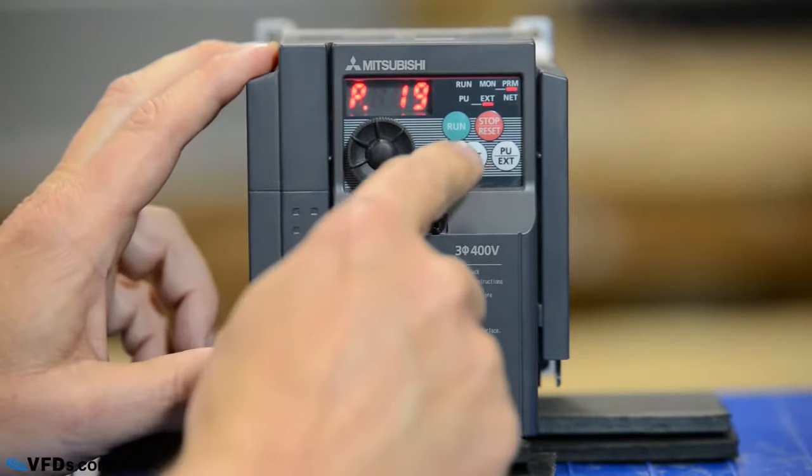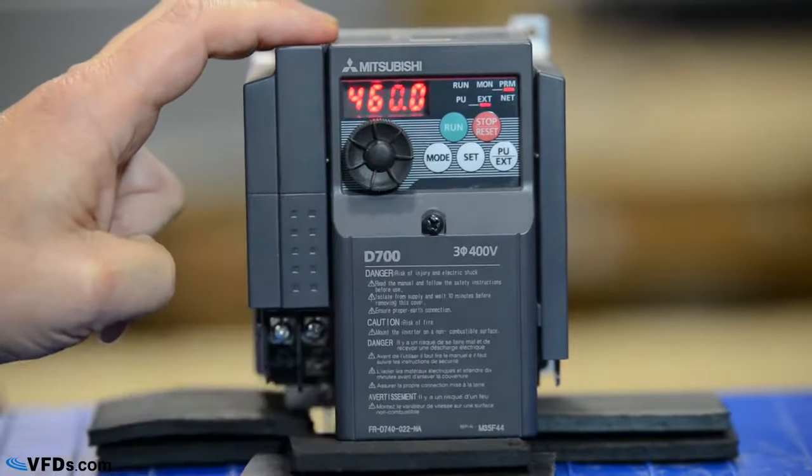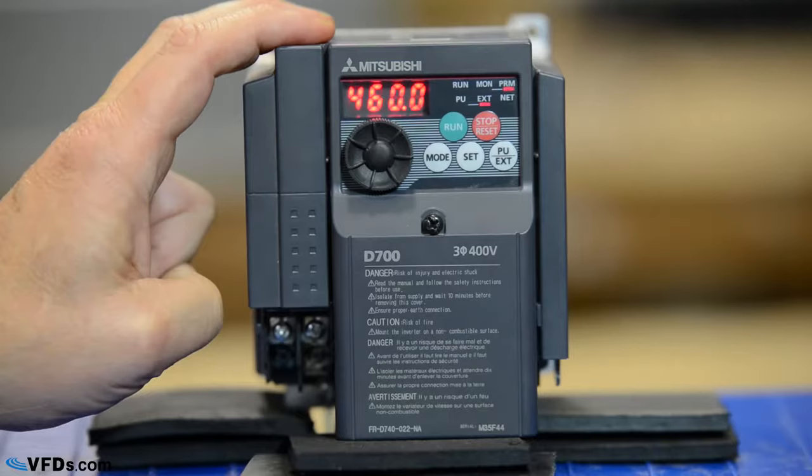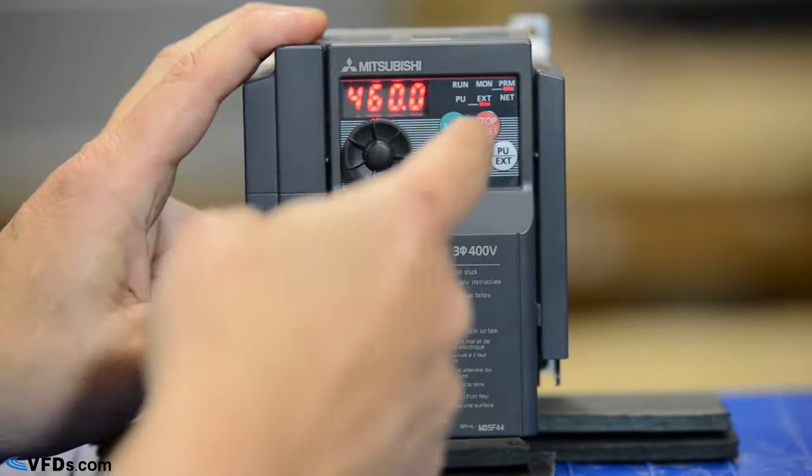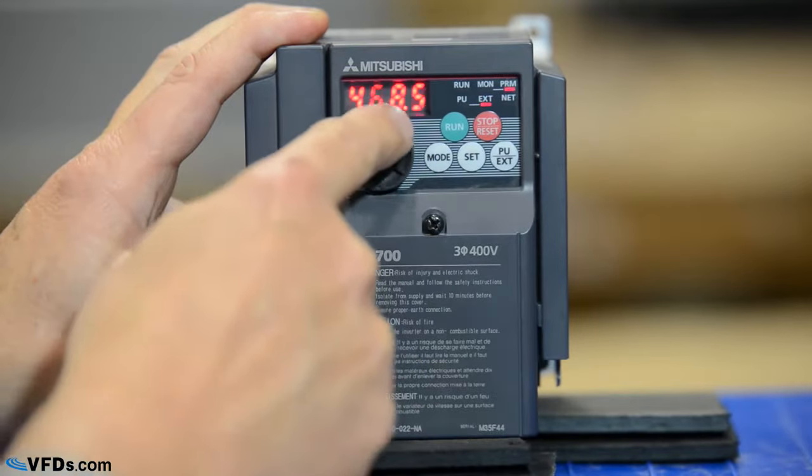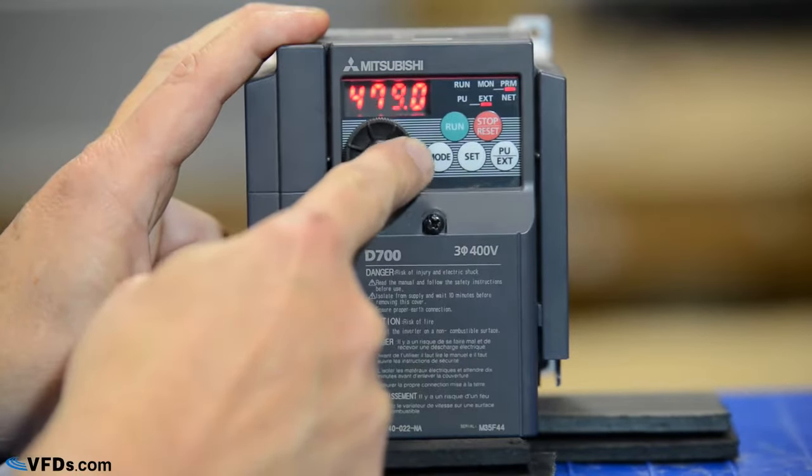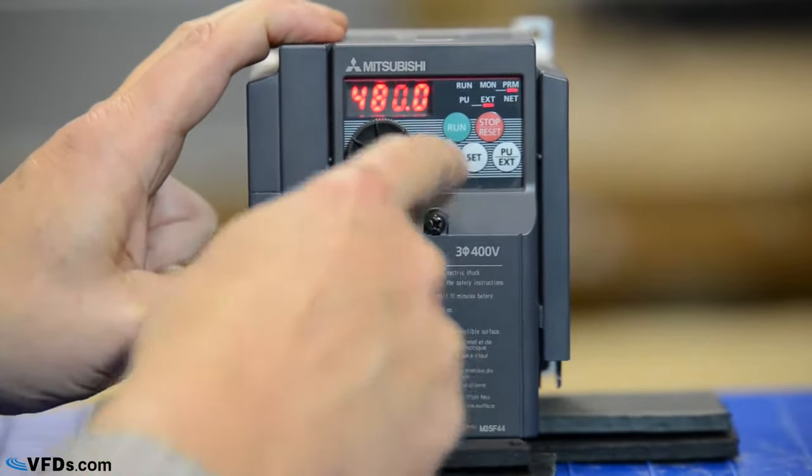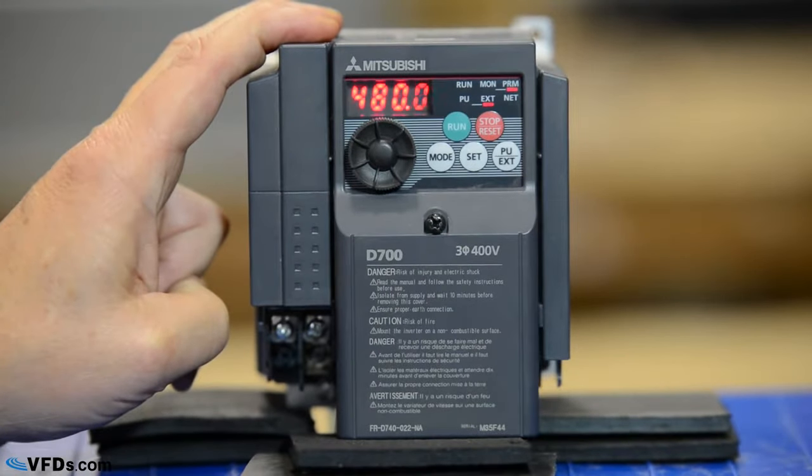So we're on parameter 19. We press set and that is set for 460 volts. Maybe I want my motor set for 480 volts. I simply change this to 480 volts, and when I get to 480 I simply press set again and it blinks to show me that I've changed that setting.